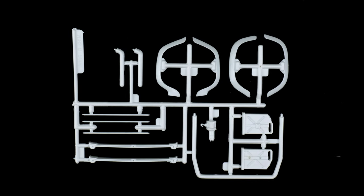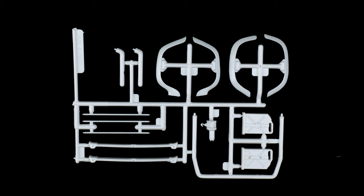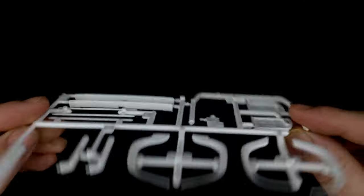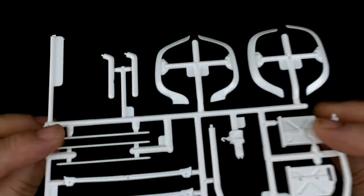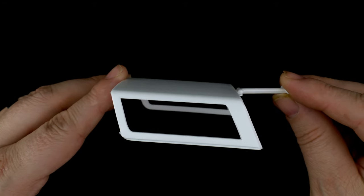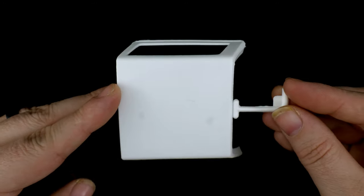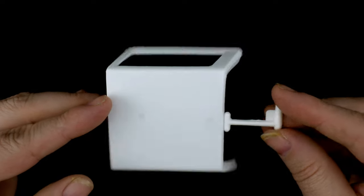Moving on to the last parts tree here for the Bronco. We have the fender flares, fuel can, winch, roll bar. I'm not sure what these pieces are for just yet. And the rear half cap, whatever it's called.